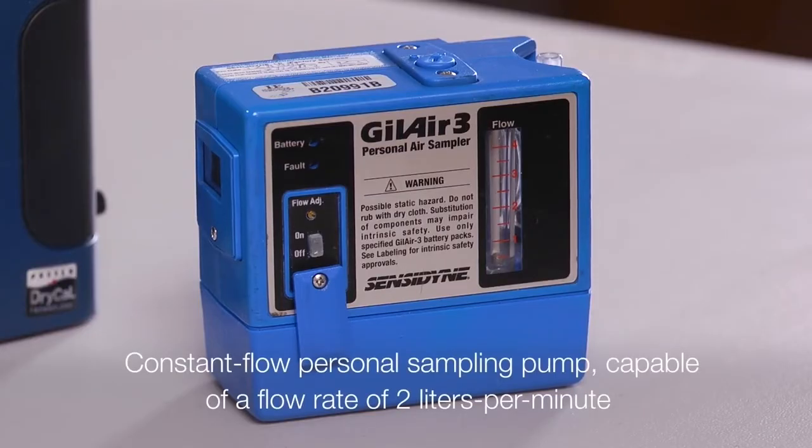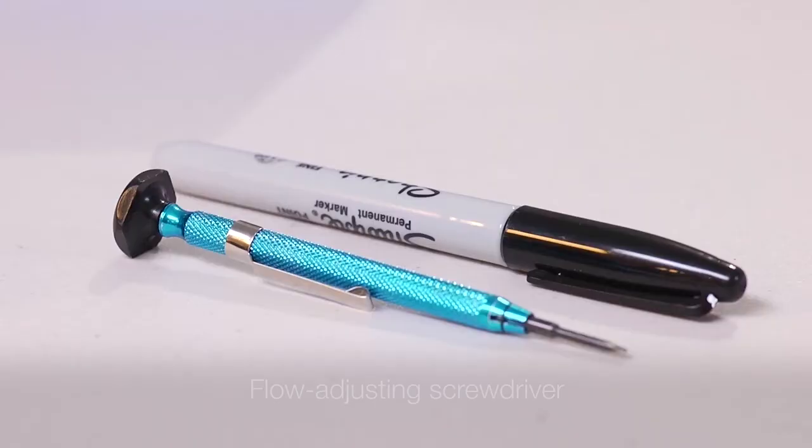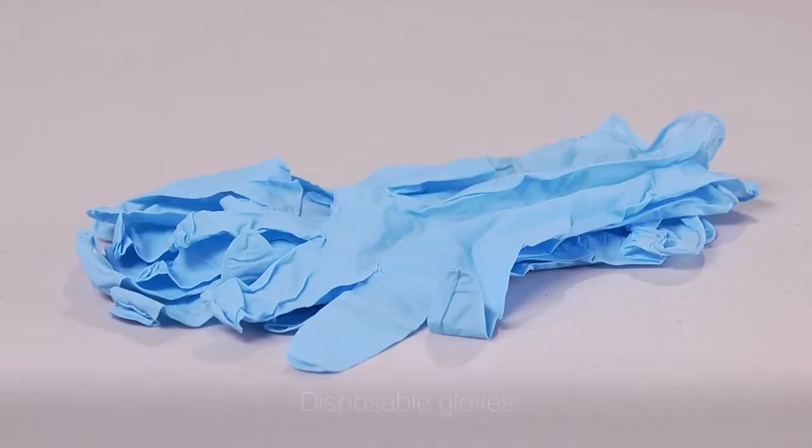Constant flow personal sampling pump capable of a flow rate of two liters per minute, calibrator such as a piston calibrator or bubble meter, a flow adjusting screwdriver and disposable gloves.